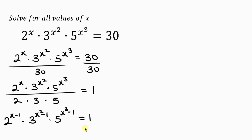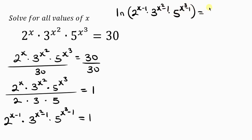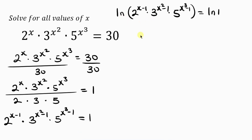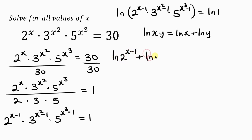The next step is to take the natural log of both sides. So we have ln of 2^(x−1) times 3^(x²−1) times 5^(x³−1) equals ln 1. Using the law of logarithms — ln(xy) = ln x + ln y — we expand this as: ln 2^(x−1) + ln 3^(x²−1) + ln 5^(x³−1) equals 0.